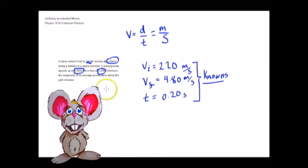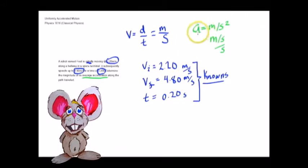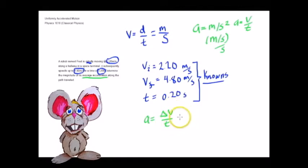Now we want to find our average acceleration. Our average acceleration will be in meters per second per second — that's a better way to say it than meters per second squared. Acceleration is a rate of change in velocity over time. So A equals delta v over t, because it's a rate of change in velocity — not just velocity, but a change. So we say acceleration equals vf minus vi over t.